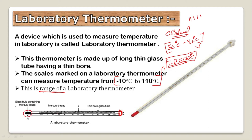The mercury thread is in the middle of the laboratory thermometer. The reading is from minus 10 degrees Celsius to 110 degrees Celsius. Sometimes it starts from minus 20, but what we normally use is from minus 10 degrees Celsius to 110 degrees Celsius.